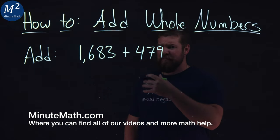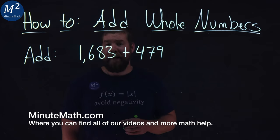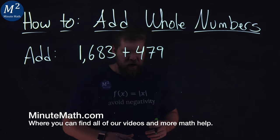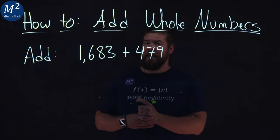We're given this problem here, 1683 plus 479. I'm going to add it. We're going to use our traditional method here for adding it.